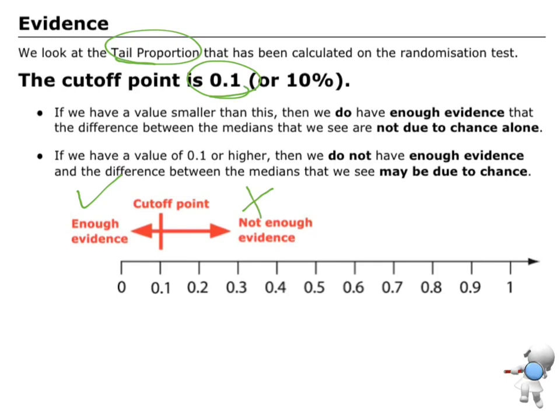If we don't have enough evidence, then any difference that we could see could be just due to random chance. Whereas if we've got a really small probability, then we have got enough evidence, and we know that it's not likely just to be due to chance alone. There's actually something more going on in it.